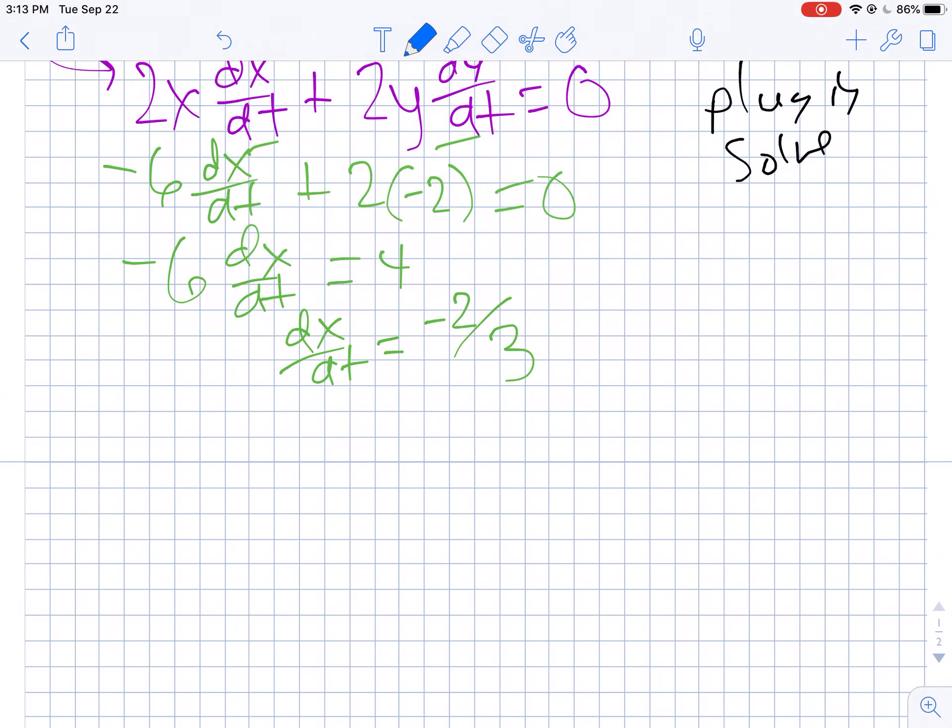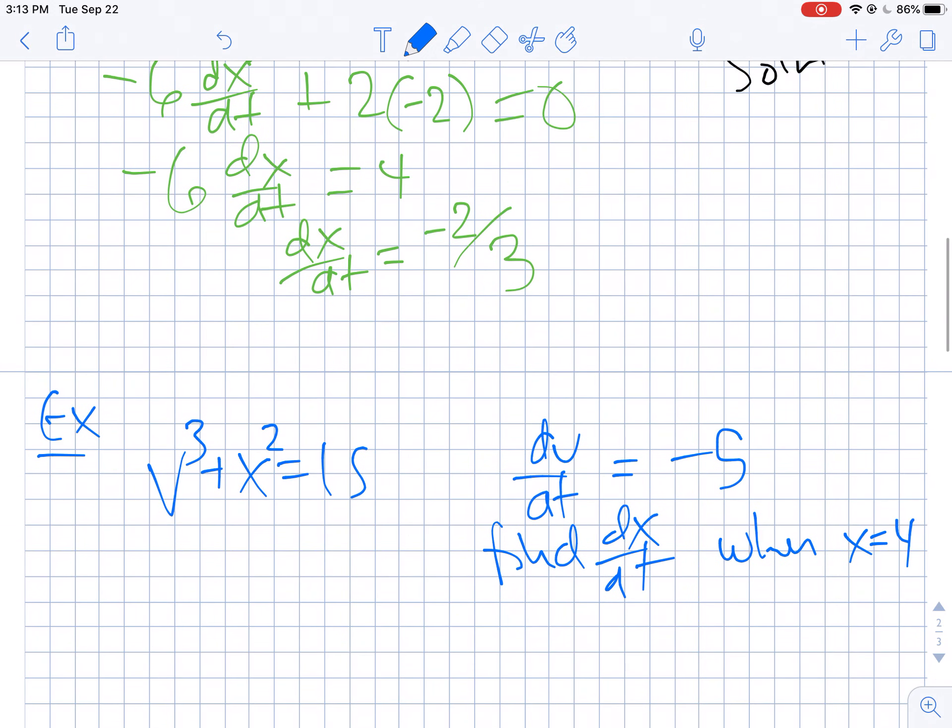Let's do a couple more, and we're going to see some more kinks in these as we go. Now let's suppose we have v³ + x² = 15, and I tell you that dv/dt equals -5, and I ask you to find dx/dt when x = 4. We need to find dx/dt, so we're going to take the time derivative of both sides. The derivative of v³ becomes 3v²(dv/dt) plus 2x(dx/dt) equals 0.